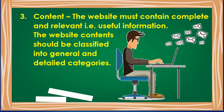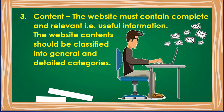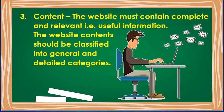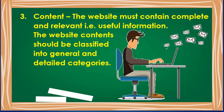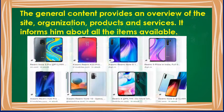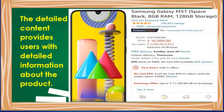Third one is Content. The website must contain complete and relevant, that is useful, information. If the information provided is incomplete, the user may leave the website. If the information provided is irrelevant, the user can get frustrated. The website content should be classified into general and detailed categories. The general content provides an overview of the site, organization, products and services. It helps the user to determine what he is searching and informs him about all the items available. The detailed content provides users with detailed information about the product.